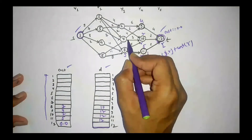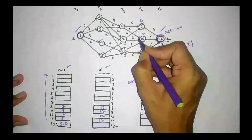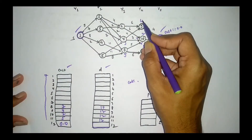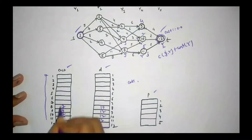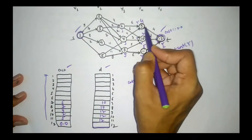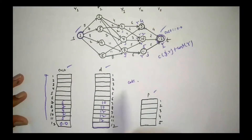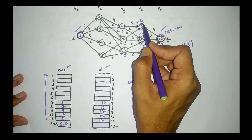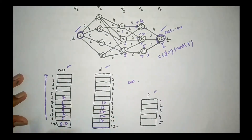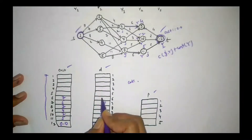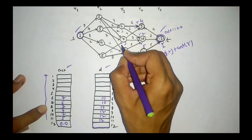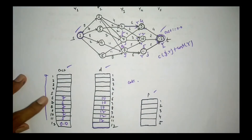For vertex 6: it connects to vertices 9 and 10. Path length 6 + cost(9) = 6+4 = 10, and 5 + cost(10) = 5+2 = 7. Minimum is 7, so cost(6) = 7 and D(6) = 10. Summarizing: cost(8) = 7, cost(7) = 5, cost(6) = 7.